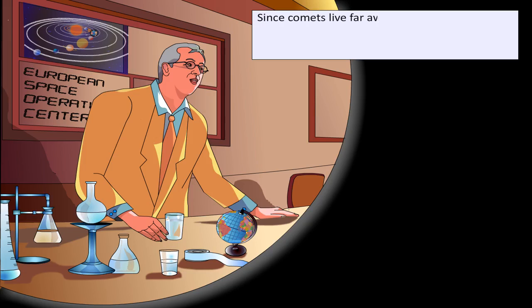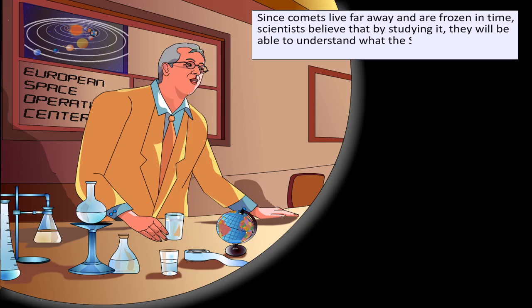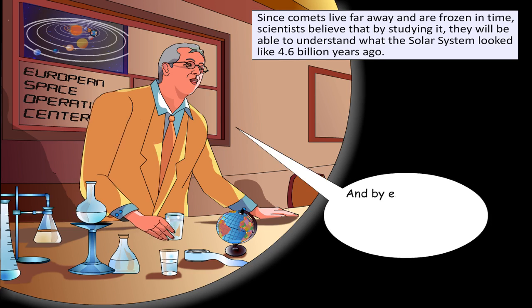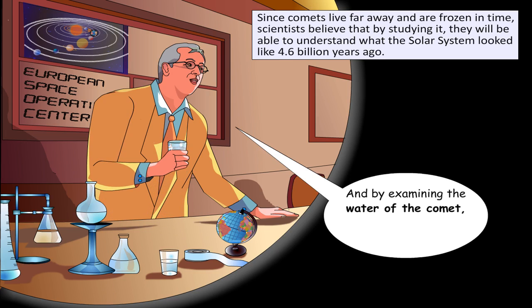Since comets live far away and are frozen in time, scientists believe that by studying it, they will be able to understand what the solar system looked like 4.6 billion years ago. And by examining the water of the comet, we can match it with the water on Earth.